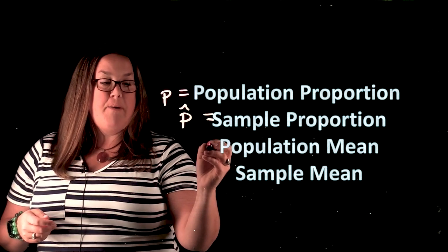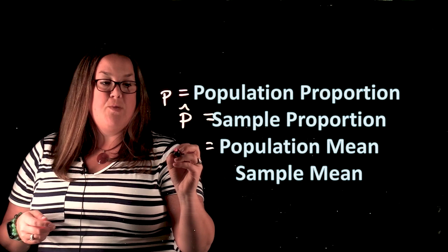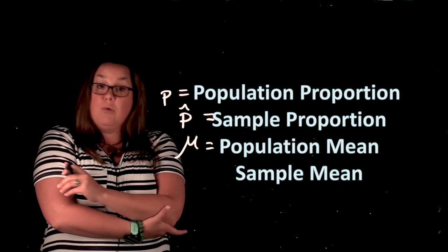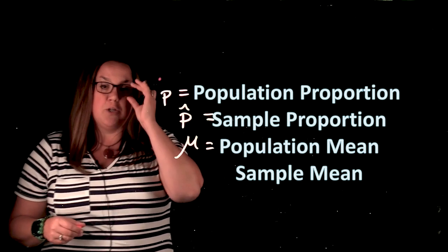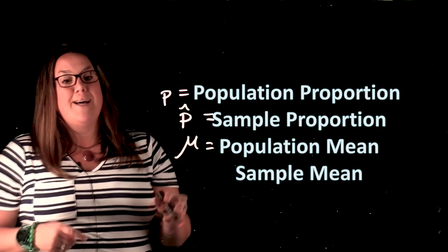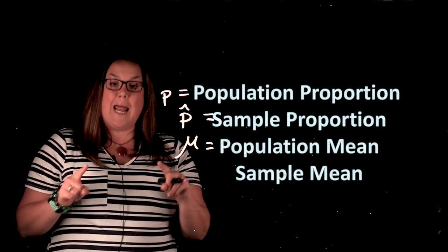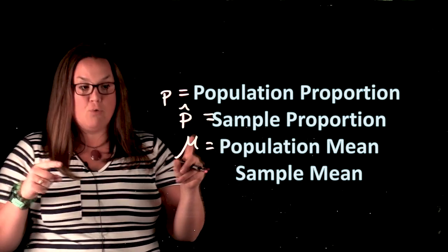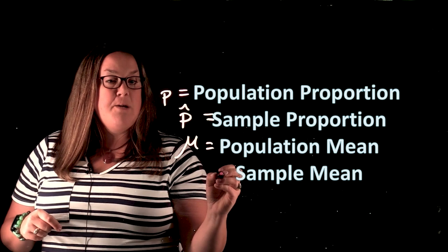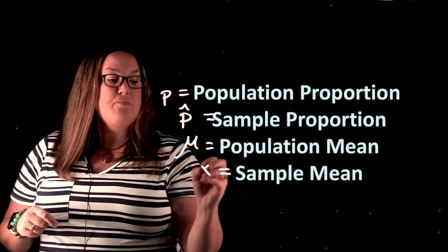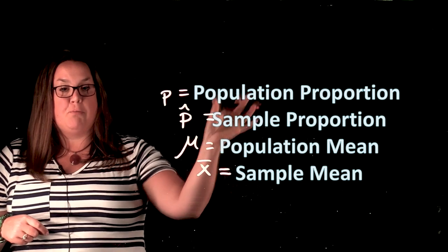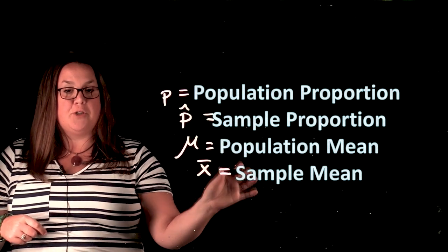Then we have the population mean and we talked about this in past videos, but this is denoted with mu. So mu is the notation for population mean, that's that Greek letter. It's not u, it's not m-e-w like the mew of a kitten, it's mu. So mu, the Greek letter mu. And then our sample mean we denoted with x bar. So we have population proportion, sample proportion, population mean, and sample mean.